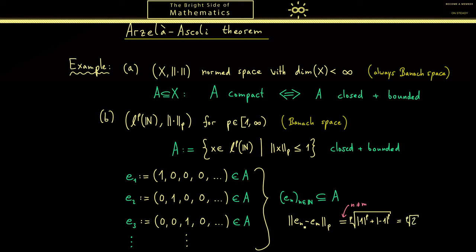Hence in the pth root we have the absolute value of 1 to the power p plus the absolute value of minus 1 to the power p. So we just have the pth root of 2. Now please note this works for all n and m as long as they are not chosen as the same number. This means that going to a subsequence won't change that you always have the same distance between two members. It does not matter which value this number has exactly, it's greater than zero and it's the same number for all n and m.